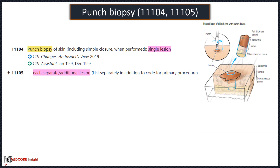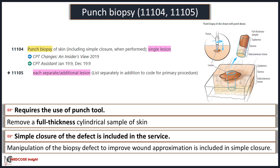Code 11104 is used for punch biopsy of a single lesion, and add-on code 11105 is for each separate or additional lesion. Punch biopsy requires a punch tool to remove a full-thickness cylinder sample of skin for diagnostic pathologic examination. Simple closure of the defect is included in the service, and manipulation of the biopsy defect to improve wound approximation is included in the simple closure.